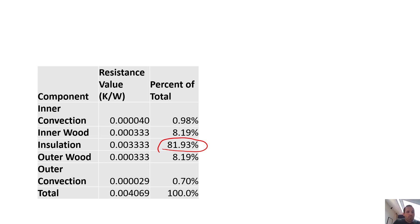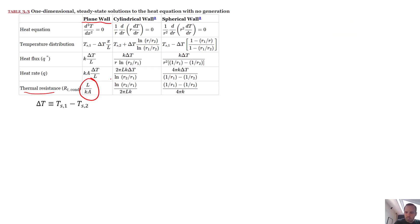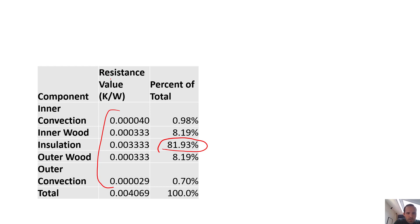So if we took all these numbers, which again we're just plug and show using the 1 over HA for the convection and then L over KA for the conduction, we can take those up and substitute them all into here. And we ended up with a total thermal resistance of 0.00406 Kelvin per watt.